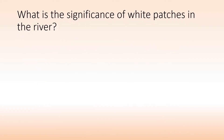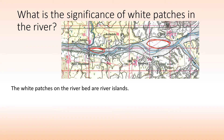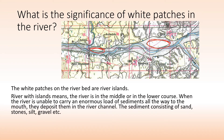What is the significance of white patches in the river bed? We can see white patches at certain points — these white patches on the river bed are river islands. A river with islands means that the river is in its middle or lower course, when the river is unable to carry the load it is carrying. So it deposits all the material — sand, gravel, stone, and silt — on the river bed, forming these river islands.